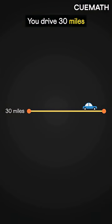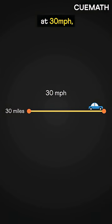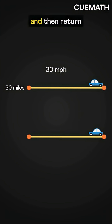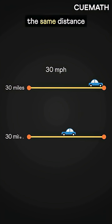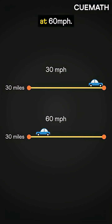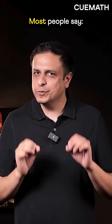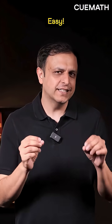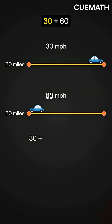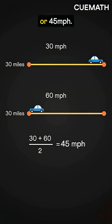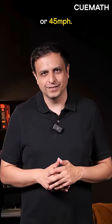You drive 30 miles at 30 miles per hour and then return the same distance at 60 miles per hour. What's your average speed? Most people say, easy — 30 plus 60 divided by 2, or 45 miles per hour.